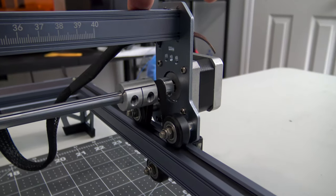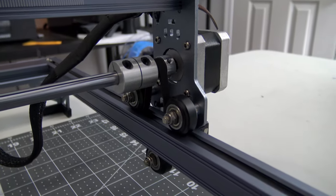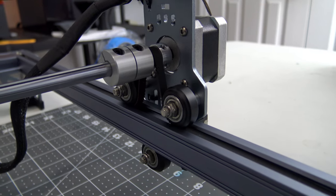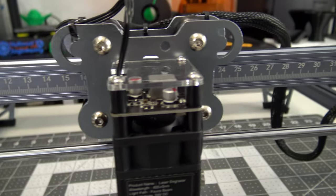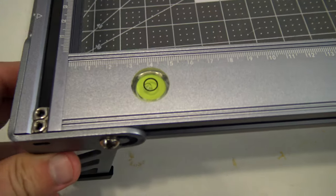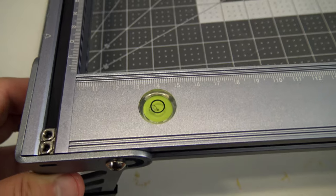The gantry moves using belt driven stepper motors riding on rubber V-slot wheels in the aluminum extrusion. The frame has measurement scales on the axes to help position the material and it also has a built-in bubble level to help gauge how flat the work surface is.